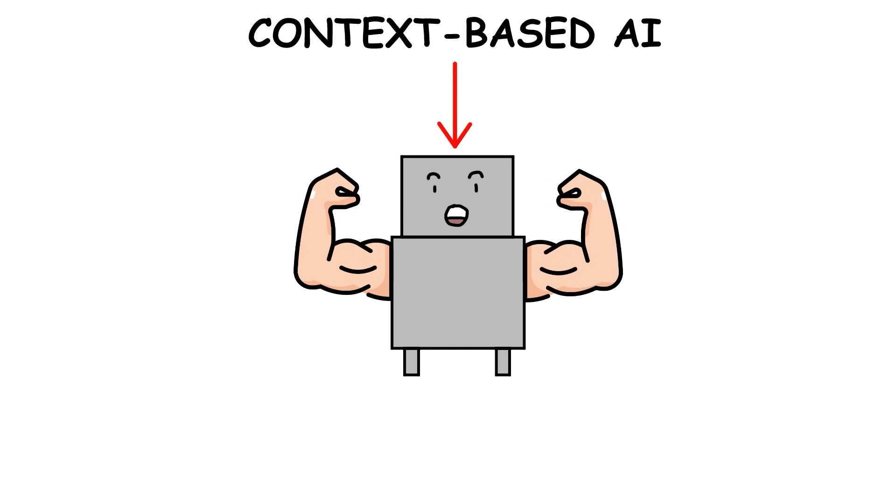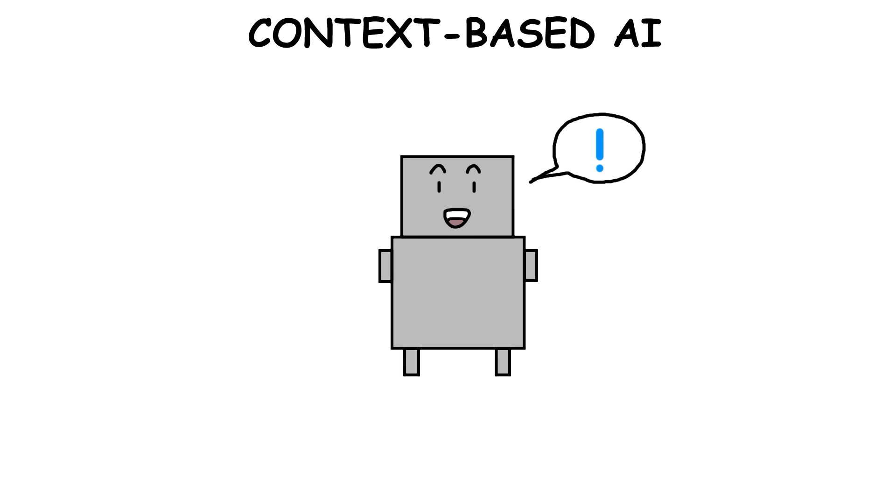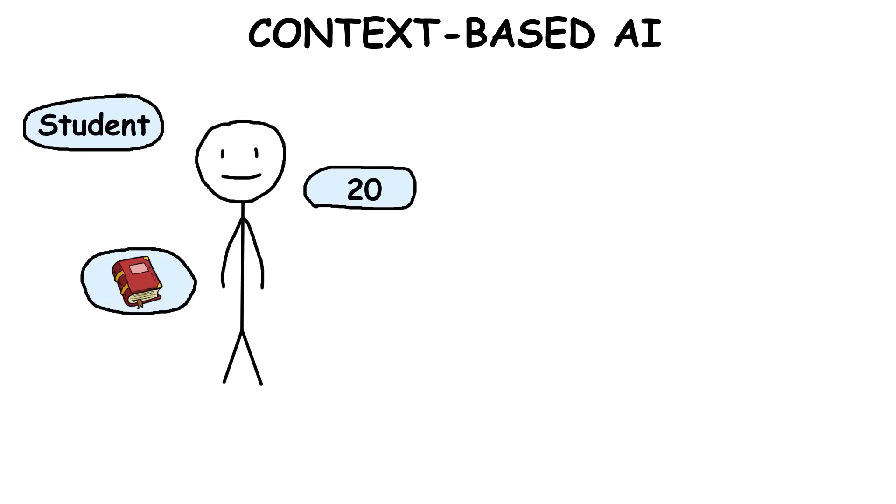One big advantage of context-based AI is that it can make predictions. By learning from your data over time, it can guess what you might need or want in the future.